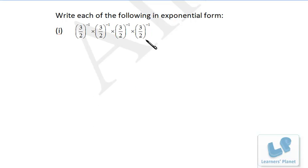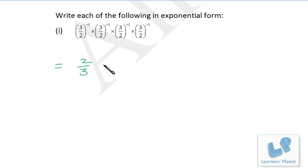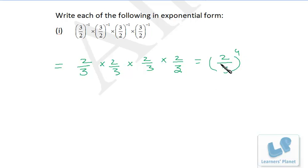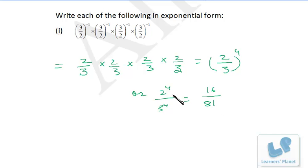Now we have to simplify this expression. All the numbers are 3 by 2 raised to minus 1 — four times. There are two ways. First, write down the reciprocal of each number so the power is converted to positive. So it's 2 by 3 raised to 1, four times. That means 2 appears 4 times and 3 appears 4 times, giving us 2 by 3 raised to 4, which equals 2 raised to 4 by 3 raised to 4 — that is 16 by 81. If the power is small you can calculate it; if the power is big, you don't have to.